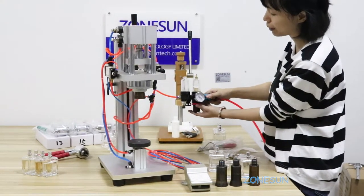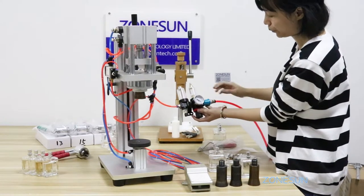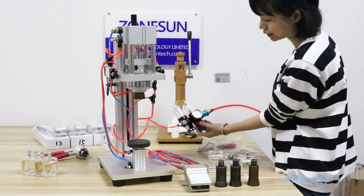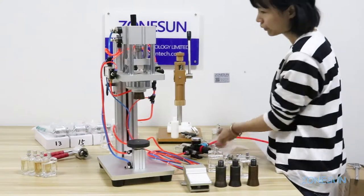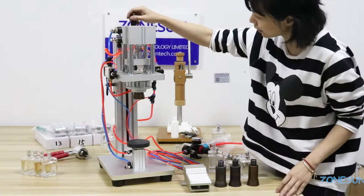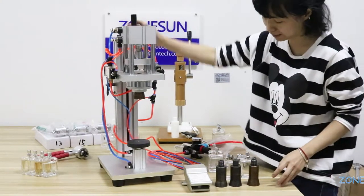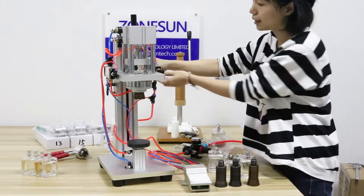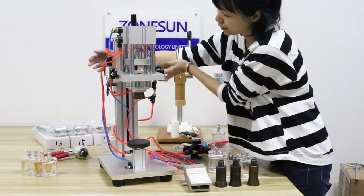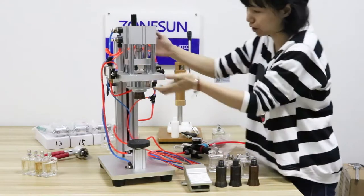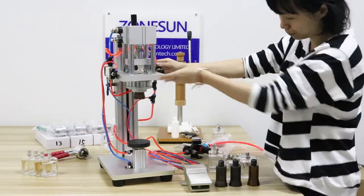You need a water separator to separate the water from the air compressor. This handle here is to adjust the height of the working plane, and these two buttons are to fix the position of the working plane.